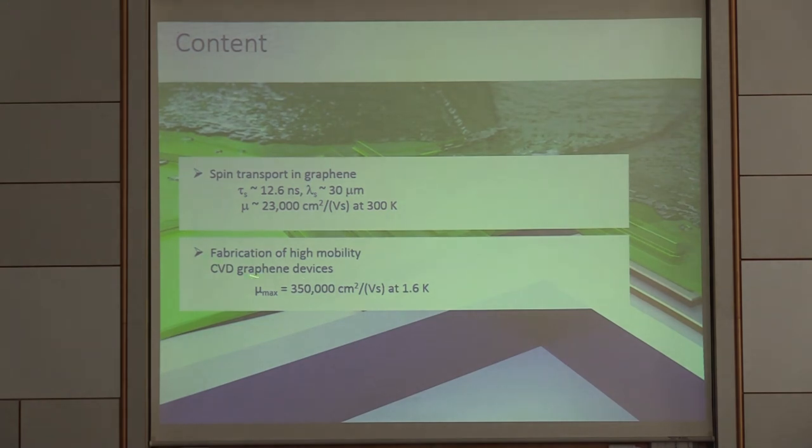I will then show you also a way how we make CVD graphene, where we now reach routinely values of around 100,000 and 350,000 at low temperature.